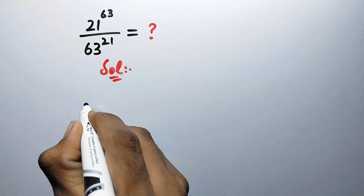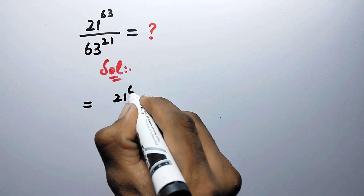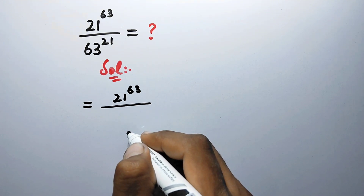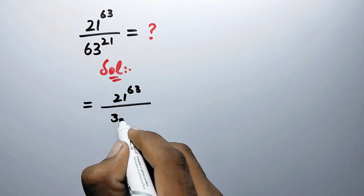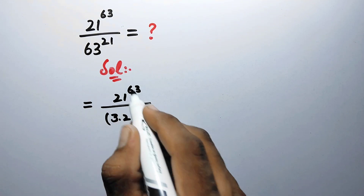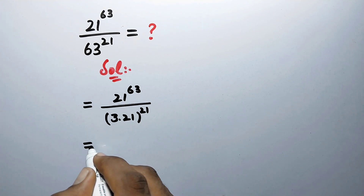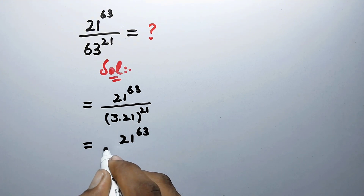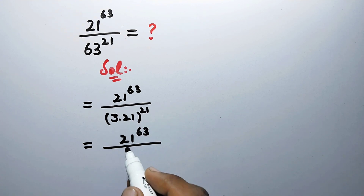In the first step we will write 21 to power 63 divided by — we can write 63 as 3 times 21, and the power is 21. In the next step we will take this power inside the bracket.